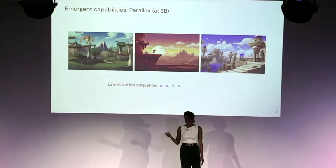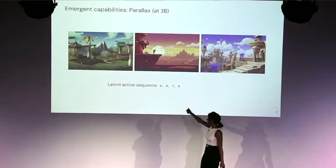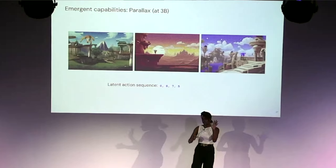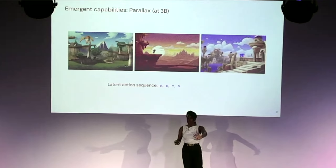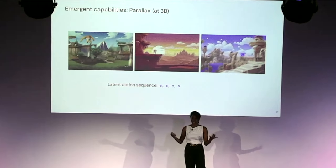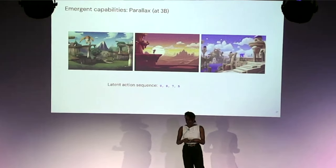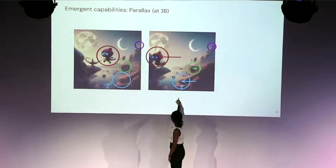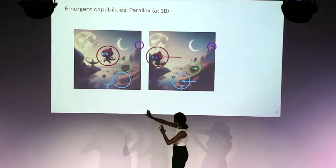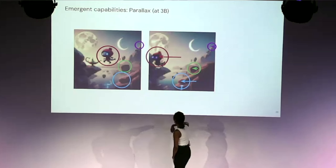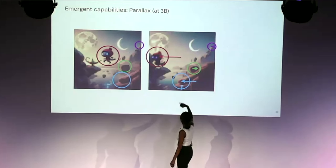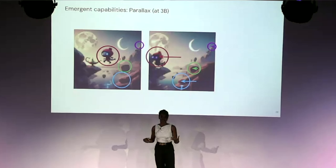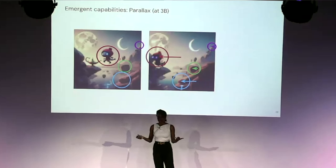Genie also learns motion parallax for free by applying the same sequence of latent actions. Motion parallax is the phenomenon where objects closer to the viewer appear to move faster than objects further away — a cue game developers use to simulate depth. Our model learns this nuance: close objects are displaced more than distant ones when the next frame is generated, showing it captures real structural properties of its training environments.